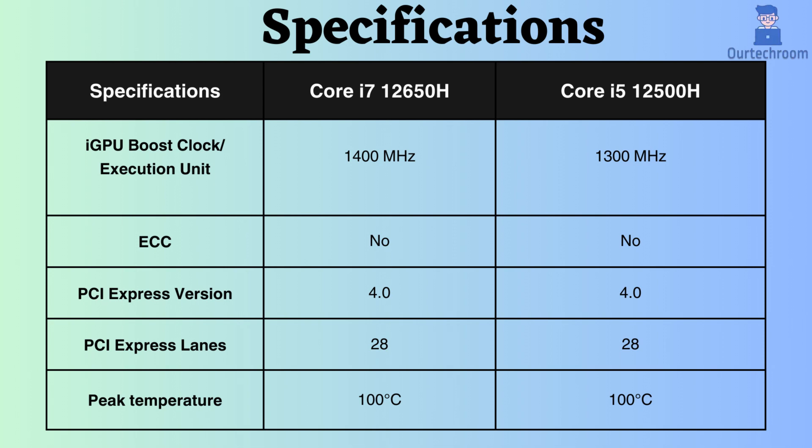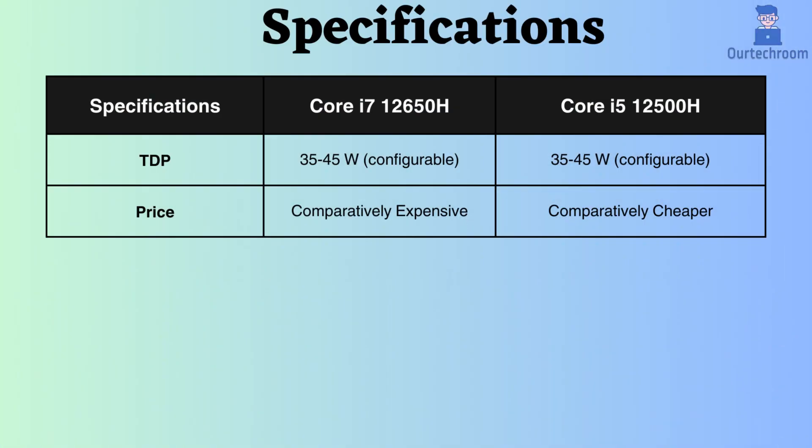Both of them can reach temperatures up to 100 degrees Celsius. The TDP of both processors is configurable, ranging from 35W to 45W. Since both are high-performance laptop processors, this range is considered acceptable.